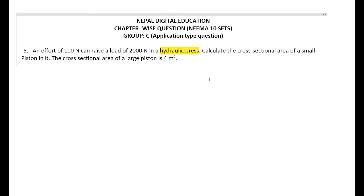Let us look at problem number 5. An effort of 100 newton can raise a load of 2000 newton in a hydraulic press. Calculate the cross-sectional area of the small piston, given that the cross-sectional area of the large piston is 4 metre square. Before solving this question we must have the idea about a hydraulic press — it is a machine which converts a small force into a large force, based on Pascal's law.